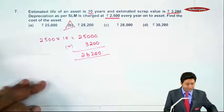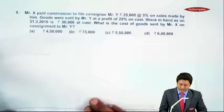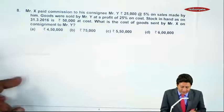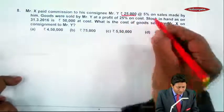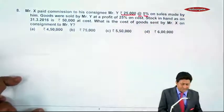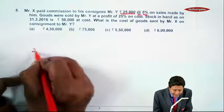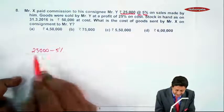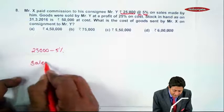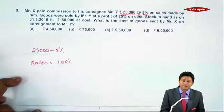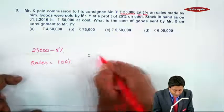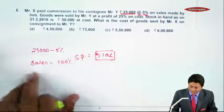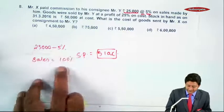Let's move to question 8. Mr. X paid commission to his consignee Mr. Y of ₹25,000 at 5% on sales. The commission paid is ₹25,000, which is 5%. If this is 5%, then sales will be how much? 100% will be how much? We cross multiply, which works out to ₹5 lakh rupees. Five lakh is the sale price.